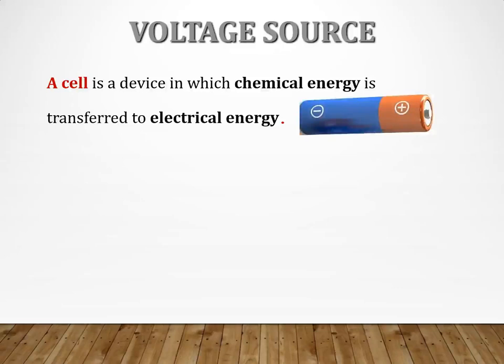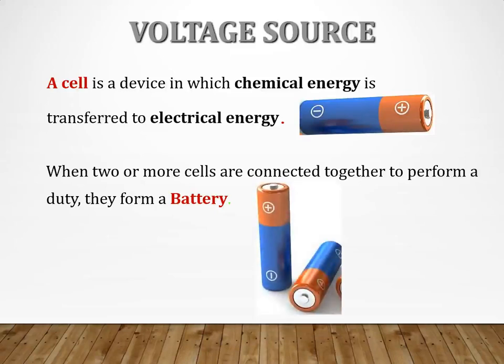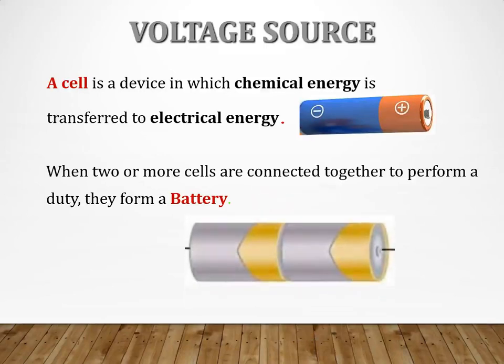And when two or more cells are connected together to perform a duty, they form what you call a battery. They must be connected together to make a battery. You've got cells like this. These are two cells adjacent to each other. Do they form a battery? No. They are just cells, not a battery. They only become a battery when they are connected like this and can perform a duty. If they cannot give us the voltage and allow current to flow through the circuit because of their connection, then they don't form a battery. They are just cells next to each other.